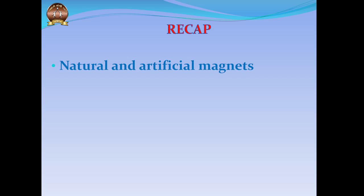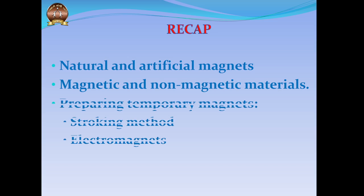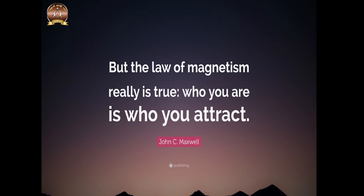Let's recap what we have learned in this video. We have learned about natural and artificial magnets — natural magnet is magnetite, also called lodestone or 'leading stone.' We learned about different artificial magnets which come in different shapes and sizes, and how we can prepare temporary magnets by the stroking method as well as by creating electromagnets. We also learned about magnetic and non-magnetic materials.